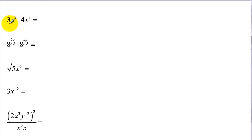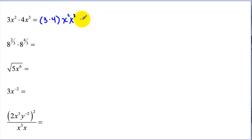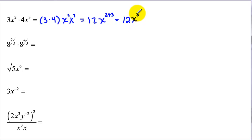Let's start with a fairly simple example. We have two expressions multiplied together with different bases but both have exponents. We multiply the coefficients: 3 times 4 is 12. Then for x squared times x cubed, we use the commutative property to rearrange and add the exponents. Our final answer is 12x to the fifth.